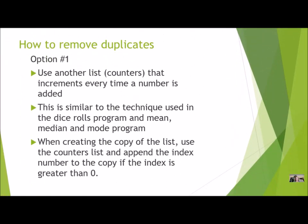I'm going to go over two different ways that you can remove the duplicates. You can pick one of these or develop your own way — these certainly aren't the only two ways to do it. Option number one: you're going to use a third list — counters. You did a counters program with dice rolls and also with the mean, median, and mode program. We know our numbers are going to be from 1 to 20, so we already have an idea of what the size for our counters would be — from zero to 20.